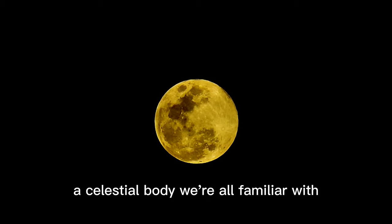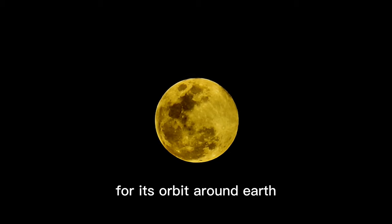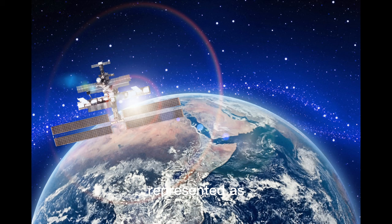Imagine the majestic Earth, designated as E. Now consider the Moon, a celestial body we're all familiar with for its orbit around Earth. Let's momentarily treat Earth and the Moon as singular points, their mass concentrated at their cores, referred to as E and M respectively. This simplification aids us in defining the distance between Earth and the Moon, represented as R.